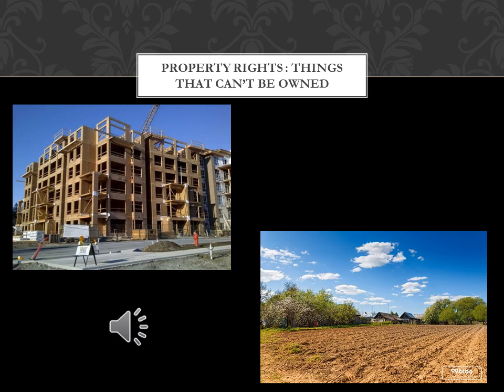Some things can't be owned at all and therefore can't be considered property. Some of those things — such as light, air, and the high seas — can't be owned because they are naturally communal. Other things, such as rivers and coastal waters, can't be privately owned because they belong to the public. And some things can't be owned because they are illegal, like heroin.